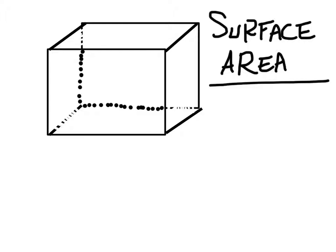If we look, you've got the front surface, the right side surface, the top surface, the left surface, the bottom surface, and in the back there's a surface. If you kept track, that is a total of six surfaces. So let's look at each surface.